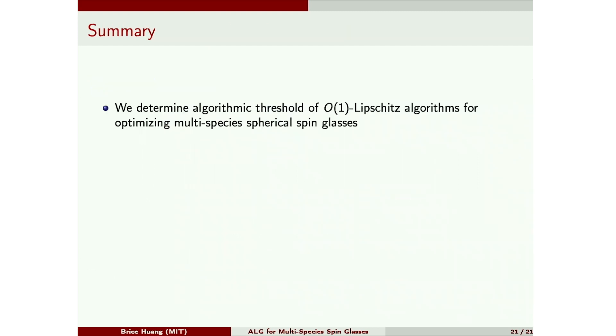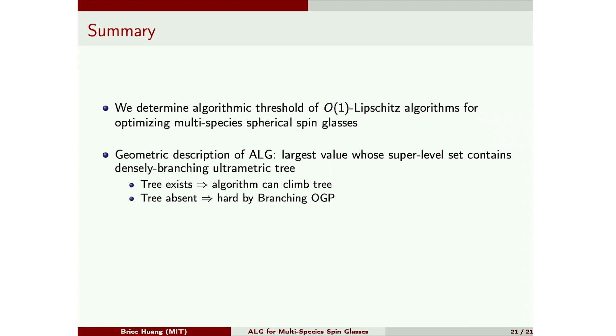Okay, so let me wrap up. So we determined the algorithmic threshold for this multispecies spin glass model for Lipschitz algorithms. And this points to a geometric description of the algorithmic threshold, as the largest value whose superlevel set contains this densely branched and ultrametric tree. So the story that's emerging is when this tree exists, an algorithm like Subag's algorithm is able to follow a root-to-leaf path of this tree. And when this tree doesn't exist, then the branching OGP implies hardness. Thanks for your attention.